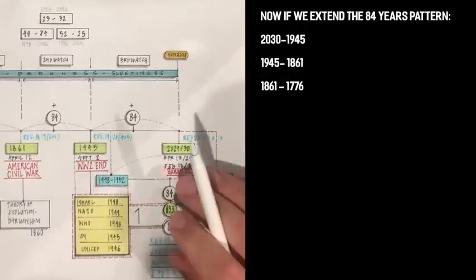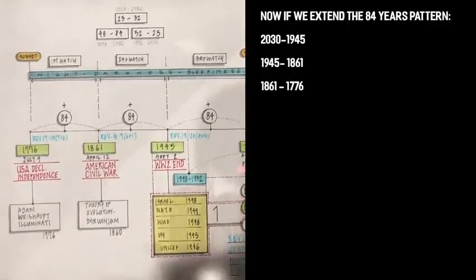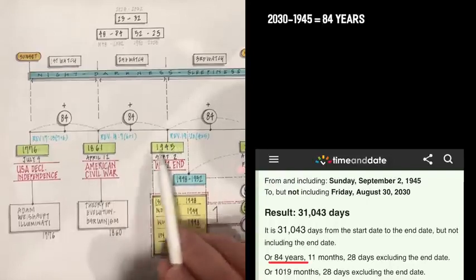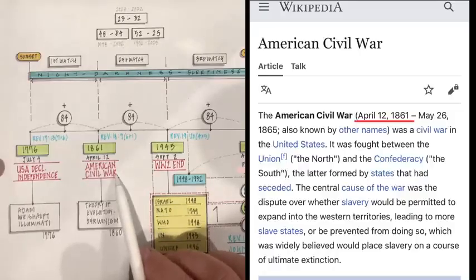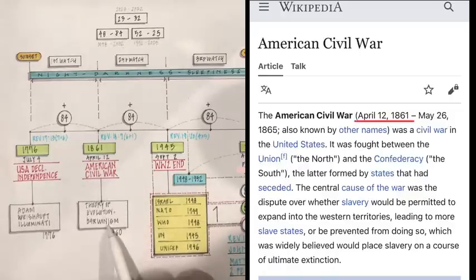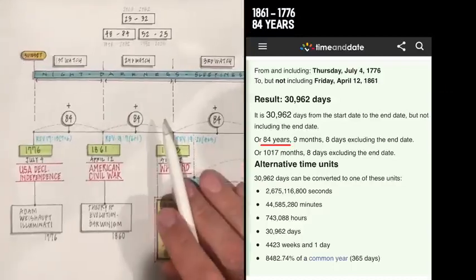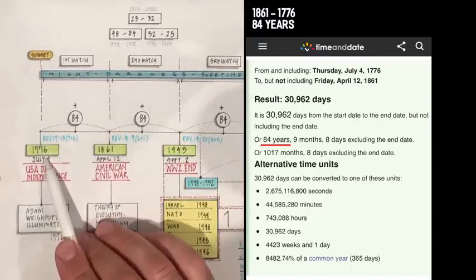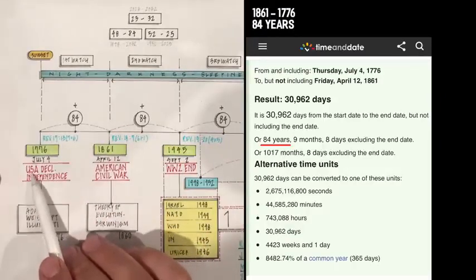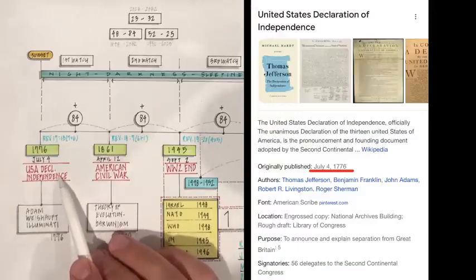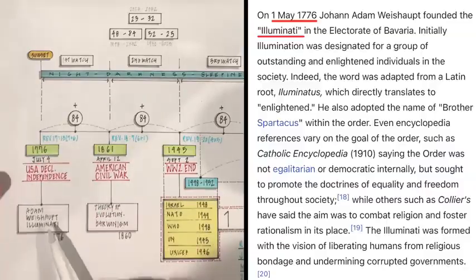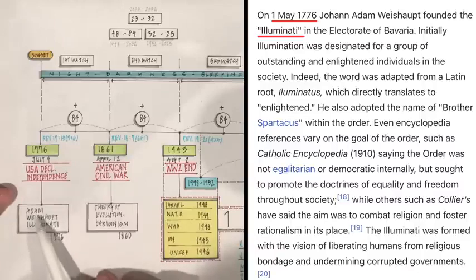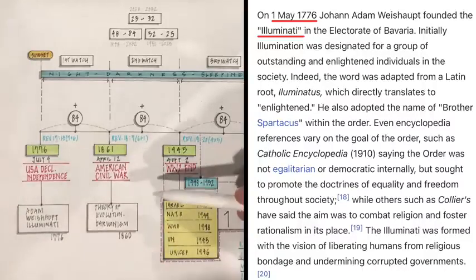So, let's pause that for a second and take a look at what happens when we shift back 84 years from 1945. We land in 1861, which is the start of the American civil war. And is right around the time when Darwin publishes his ideas about evolution. And 84 years back from that takes us to 1776, which happens to be the year of the Declaration of Independence of the United States. We also know the number 76 is very important. But it's also the year, the same exact year, when Adam Weishaupt founded the Illuminati.